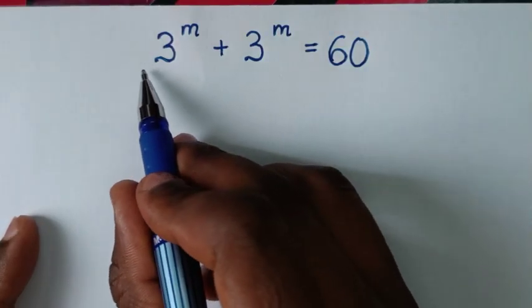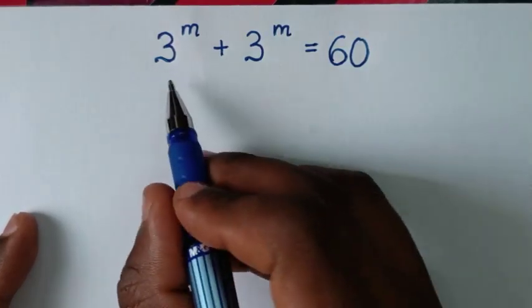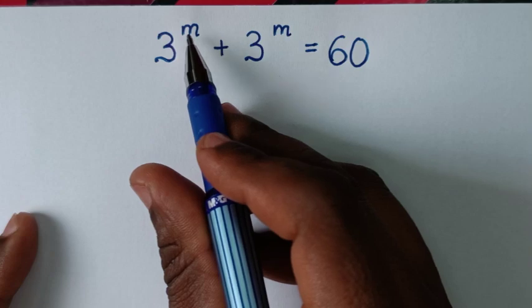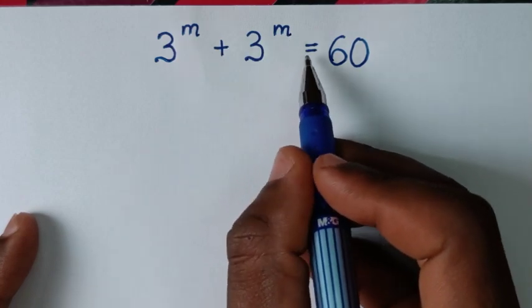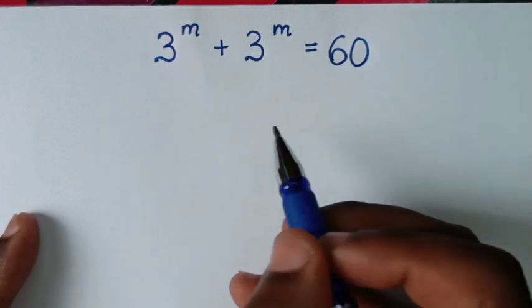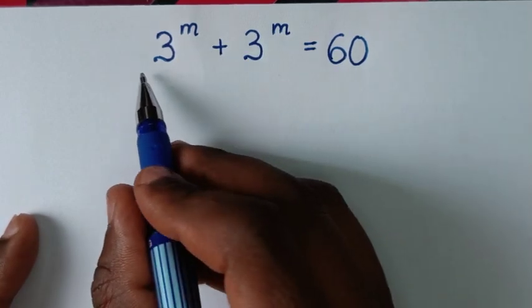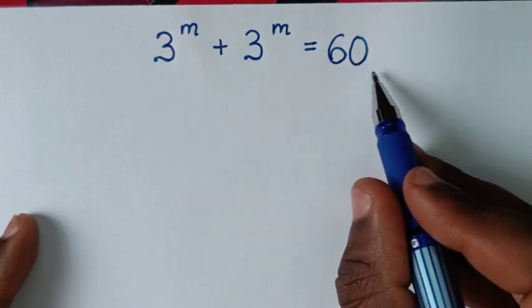Welcome. We are going to solve this math problem: 3 power of m plus 3 power of m is equal to 60. We need to find the value of m from this equation.